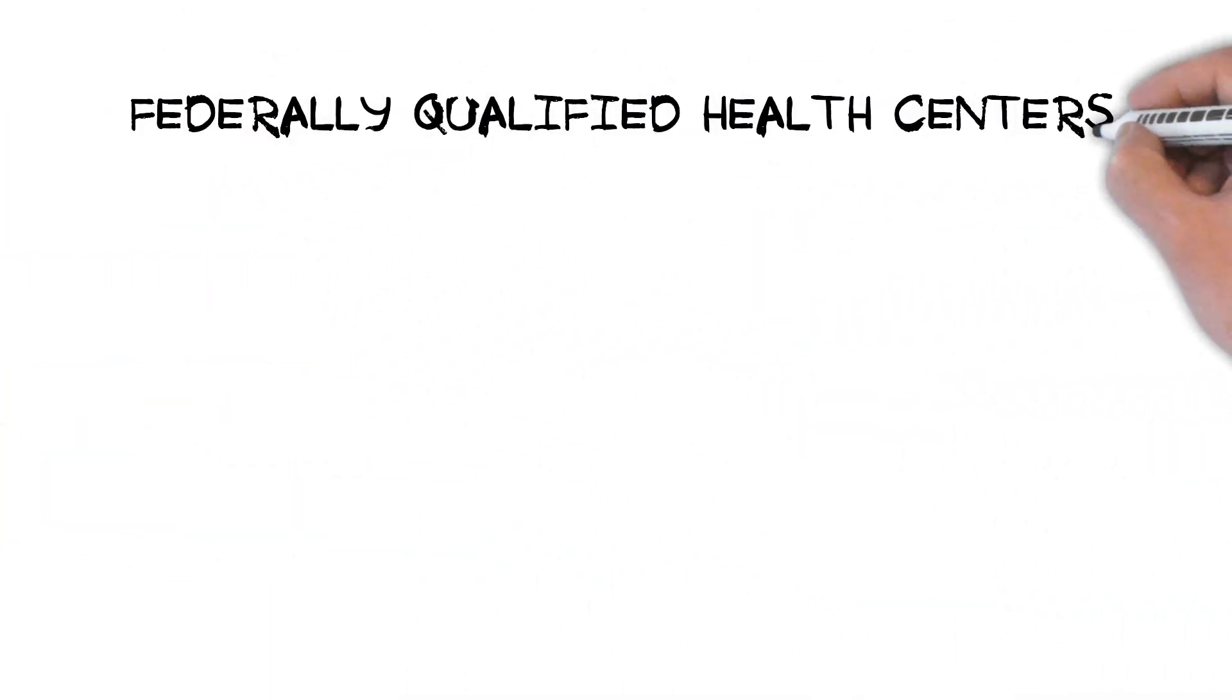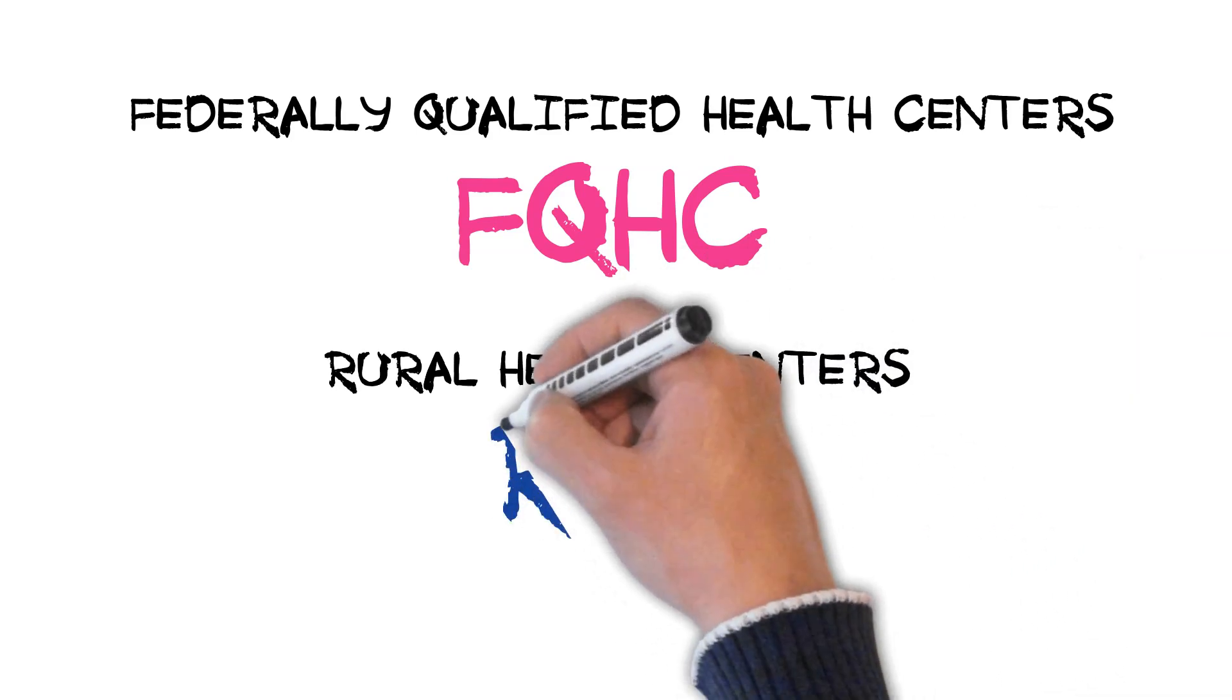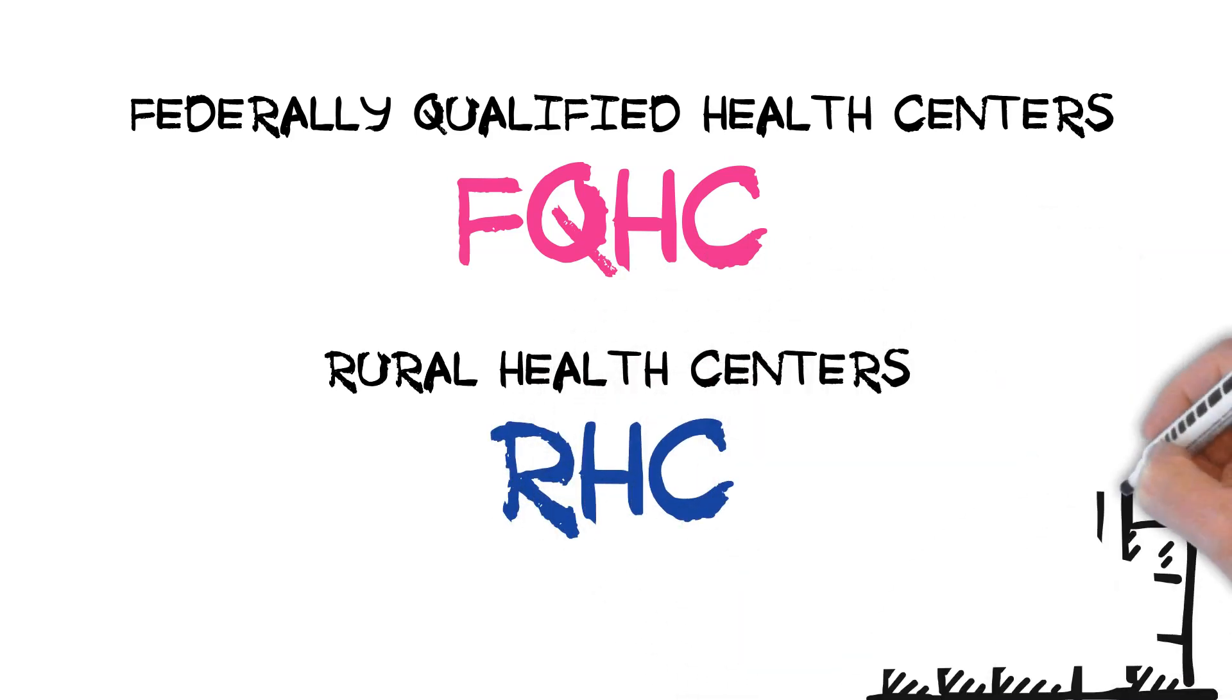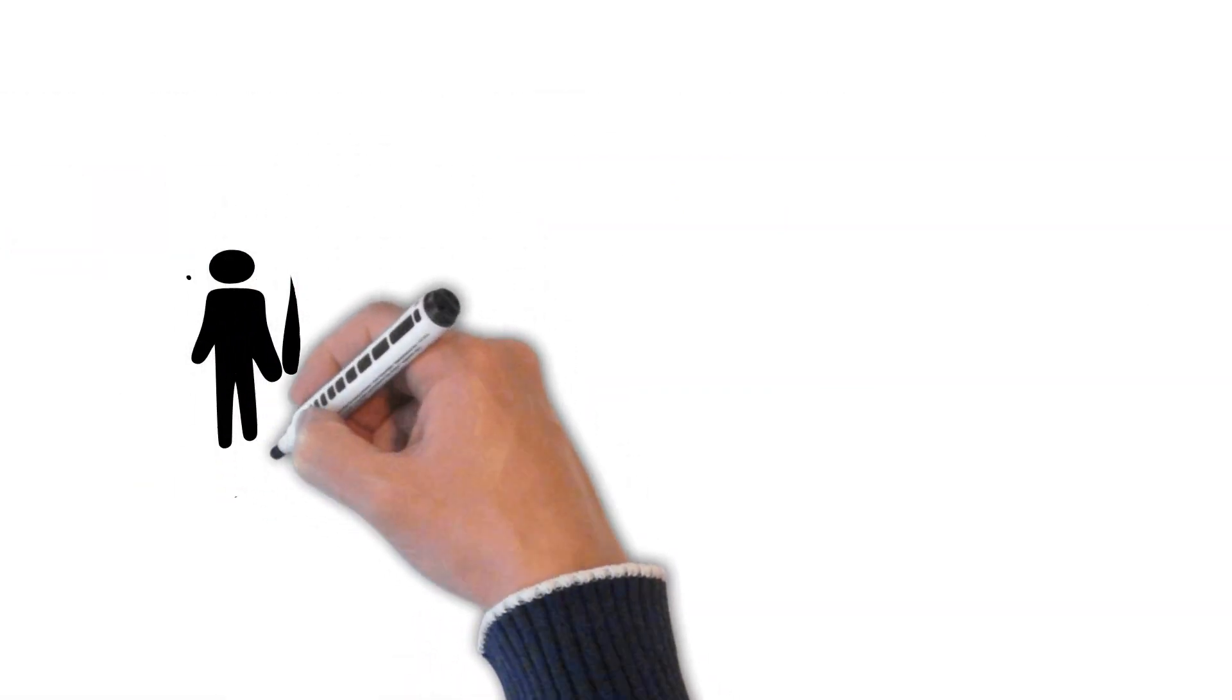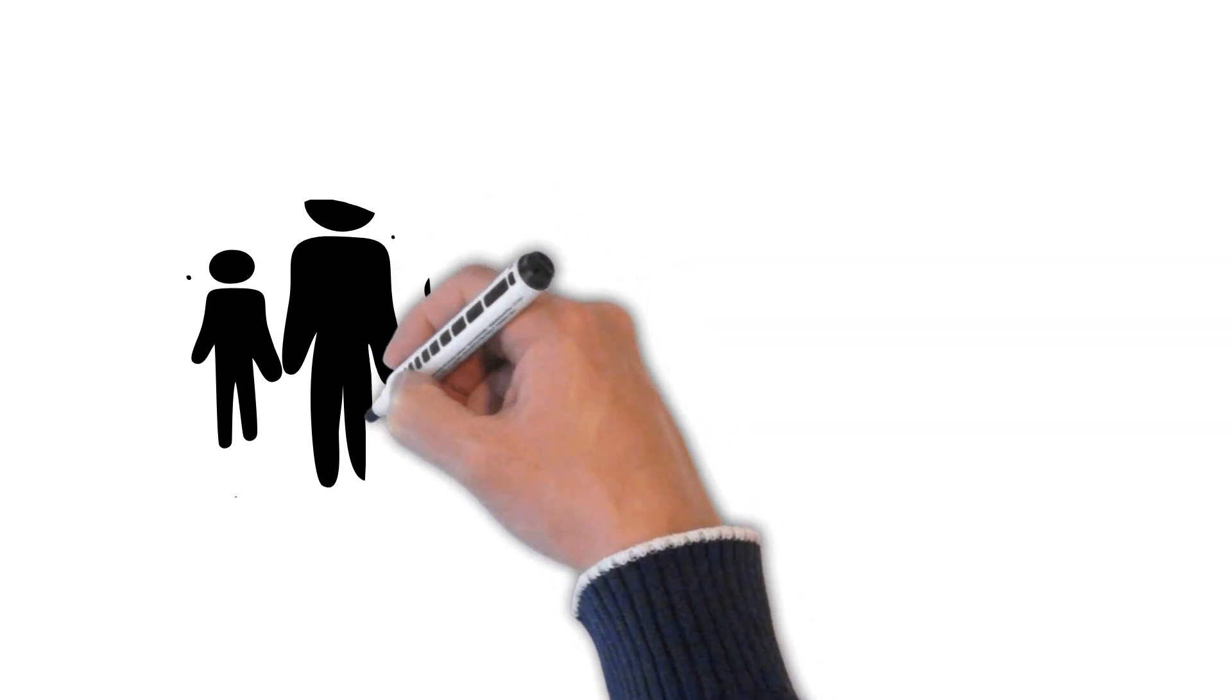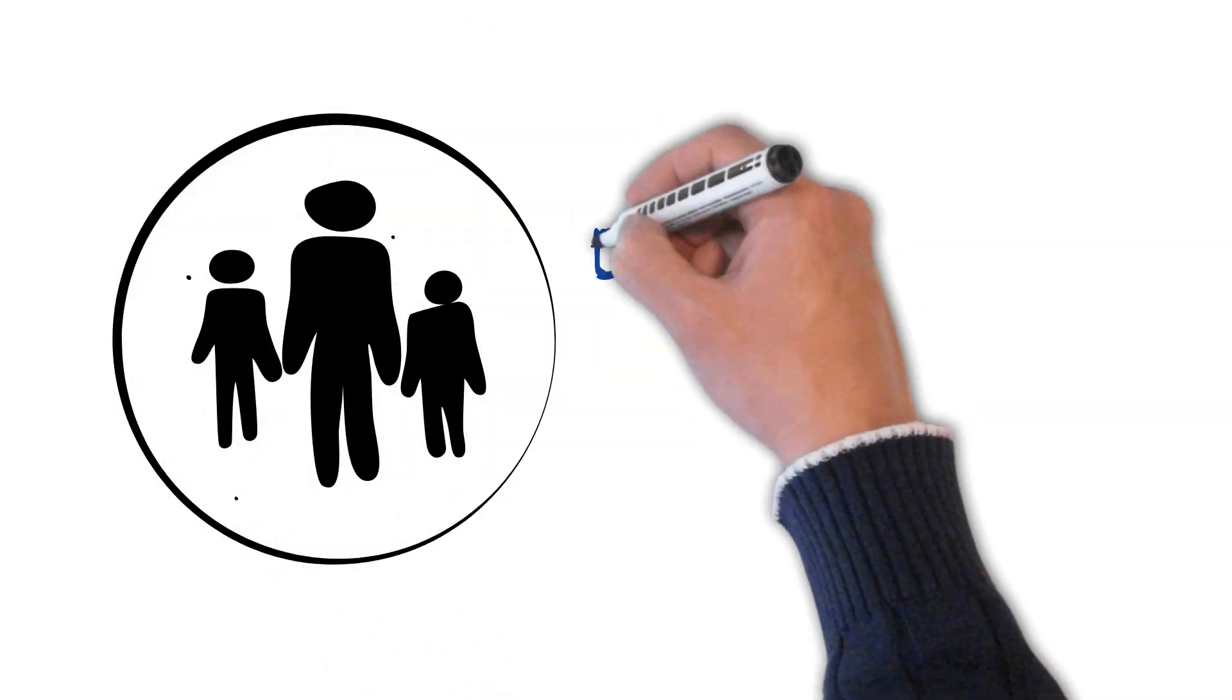Federally qualified health centers or FQHCs and rural health centers or RHCs provide affordable and accessible care to underserved patient populations in the US. Patients seen at these clinics are often below the federal poverty line or have transportation, language, or other barriers to care.